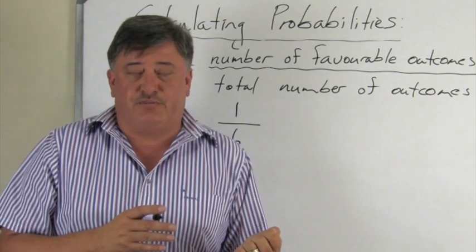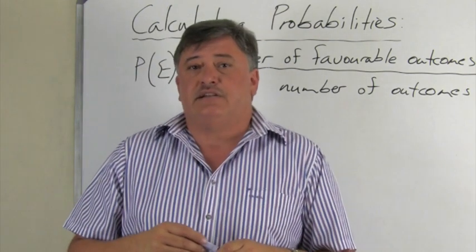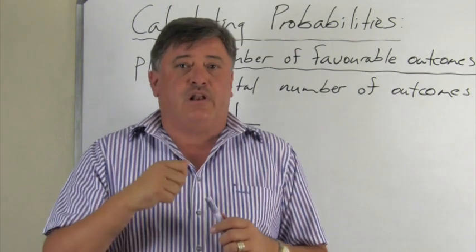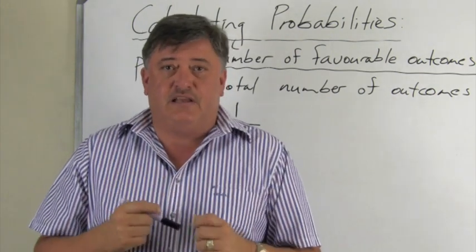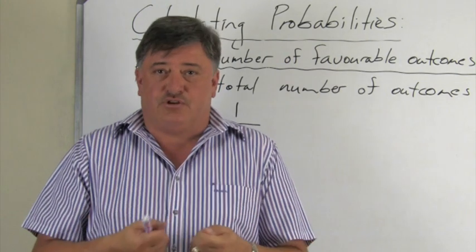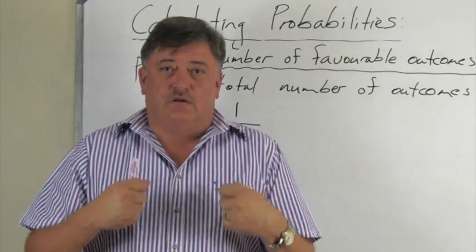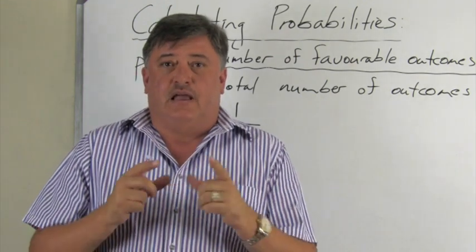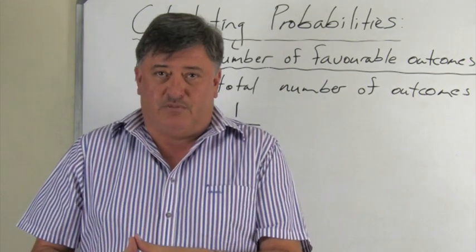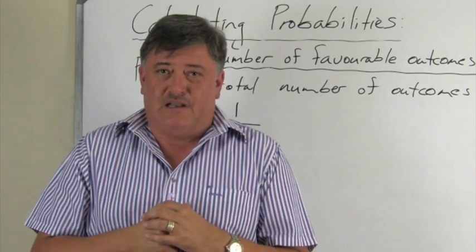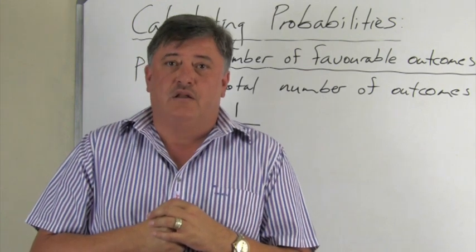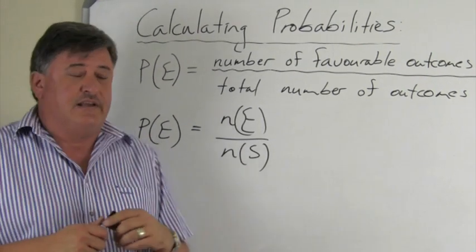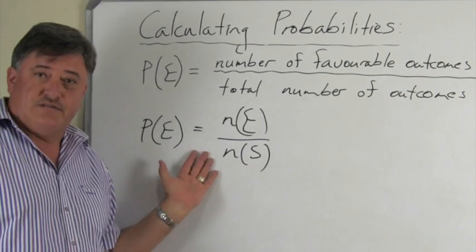We can also look at the coin. If I toss a coin and ask what is the probability that it will land on heads, we immediately ask: how many heads on a coin and how many outcomes on a coin? There is one heads and two possible outcomes, so the probability of heads is one over two.